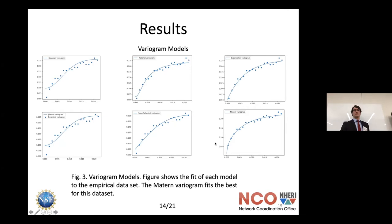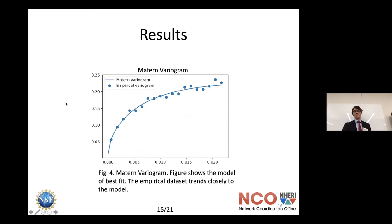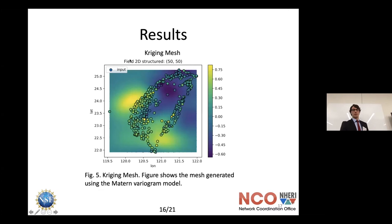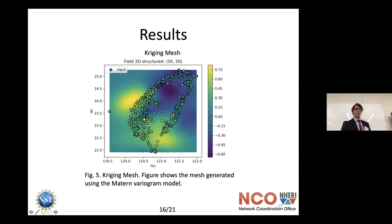The Matérn variogram worked best and we used that for our kriging. Here is a kriging mesh of the whole island showing areas of larger or smaller residual values. For example, if we want to understand the PGA value at a specific location, we grab the residual from the mesh — say it's about negative 0.05 — and then calculate backwards using the modeled PGA values to arrive at a better PGA value.